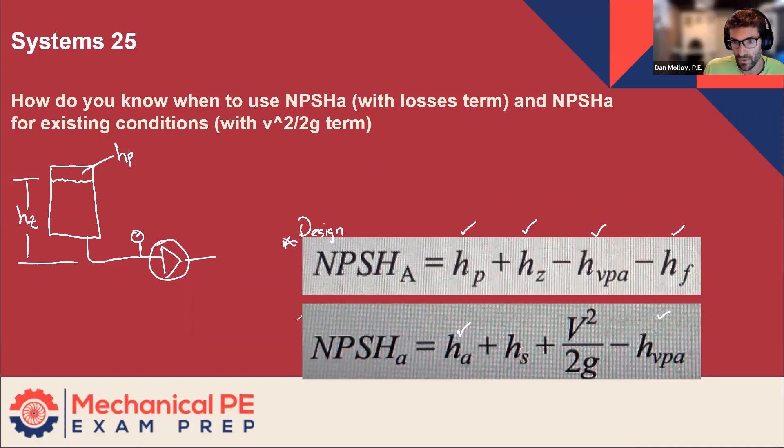So what changes that would have you use the other equation? This is the existing conditions equation. The answer is: it's already built. So instead of telling you all this other information about what's happening way upstream on the source, on the suction side, we don't care about that because we have a real measurement at the gauge at the inlet of the pump. So we can disregard everything upstream, which is why the losses term doesn't appear and the hz term doesn't appear. Because it doesn't matter if there is a height of a water column sitting on the left side - the impact of that is measured by this gauge.